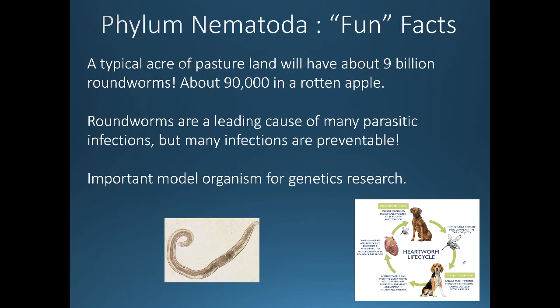Roundworms are incredibly abundant — a typical acre of pasture land contains about 9 billion roundworms, and a single rotten apple can harbor about 90,000 of them. In addition to their medical importance due to their parasitic nature, they are also critically important organisms for ecological stability. Many parasitic infections caused by roundworms are preventable or treatable, and some roundworms serve as very good model organisms for genetics research.